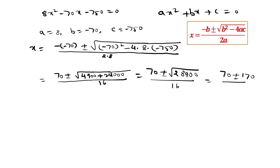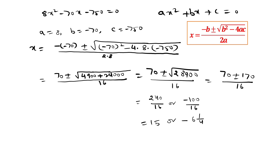The square root of 28900 is 170. First taking the positive sign, we get 240 by 16. Then taking the negative sign, we get minus 100 over 16. That simplifies to 15 or minus 6 and a quarter.